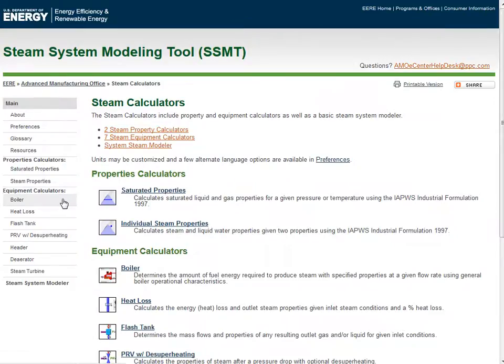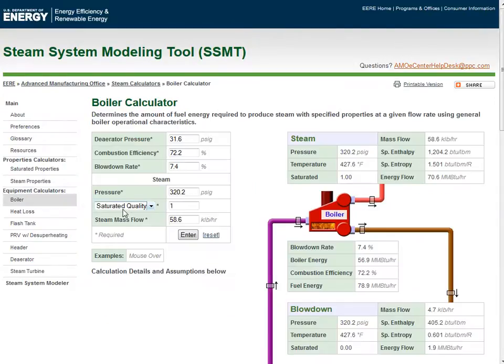The boiler calculator uses steam generation requirements and some other basic boiler related properties to calculate the fuel energy required to operate the boiler.